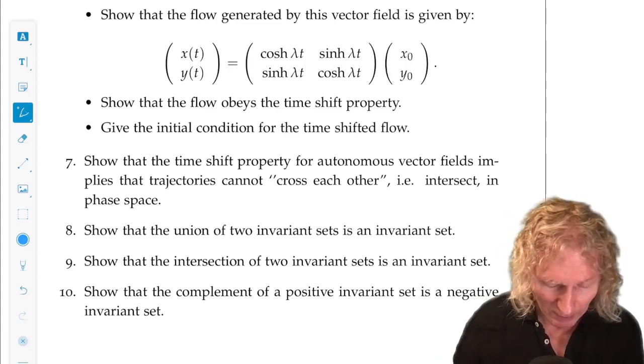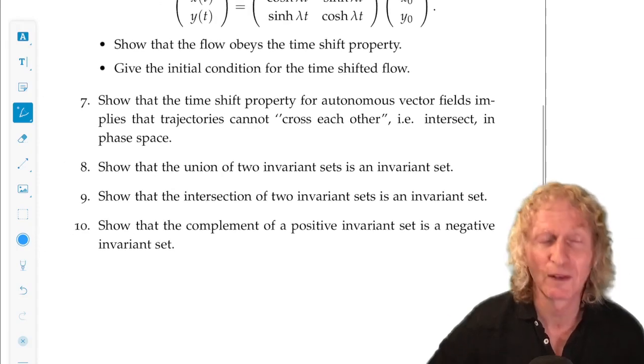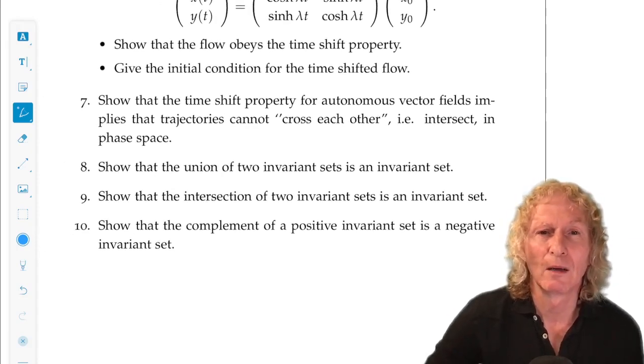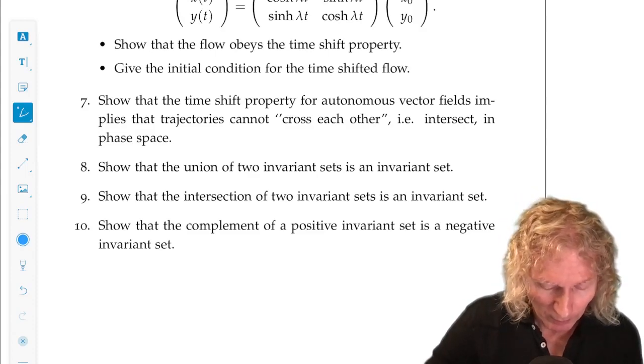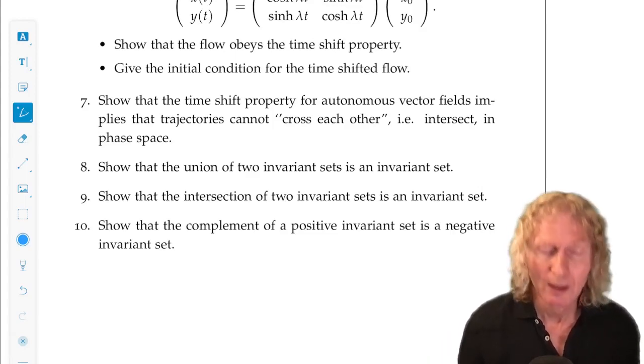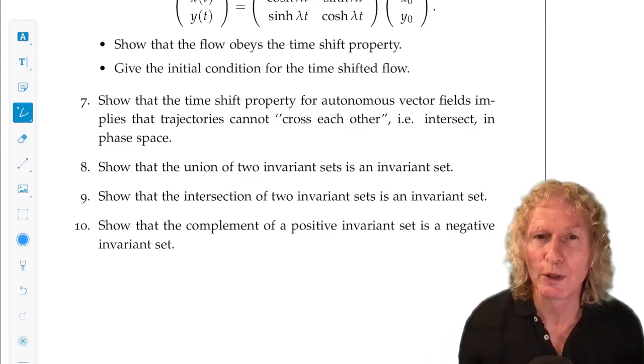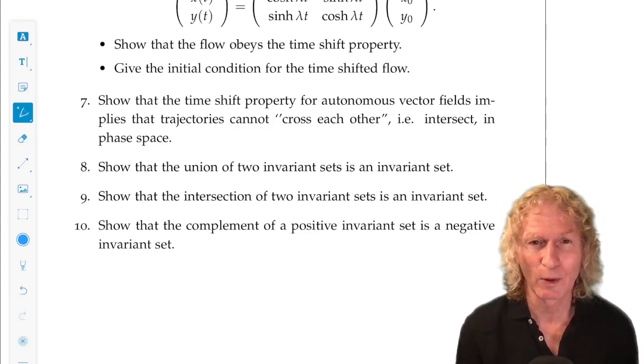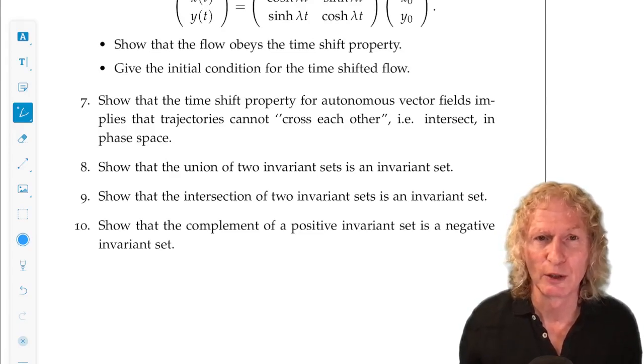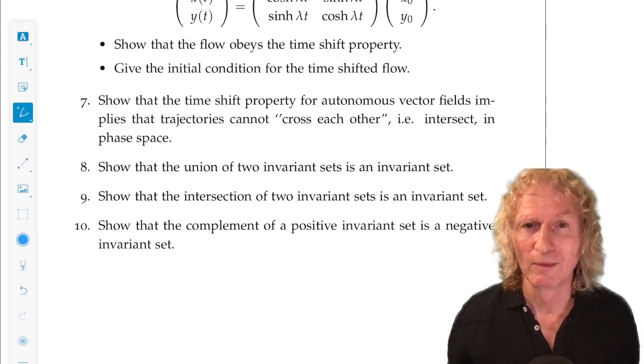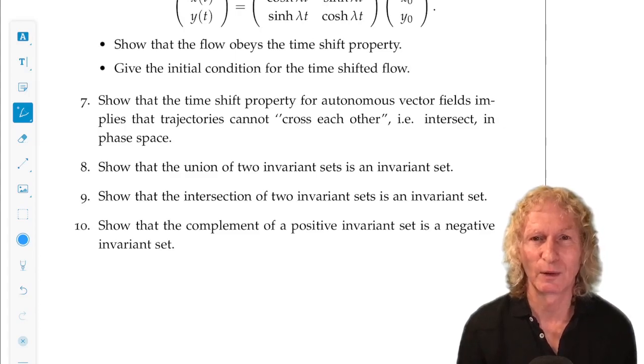Problem eight, nine, and ten. We had the notion of an invariant set for all time, positive and negative. And we have positive invariant sets and so on. But eight, show that the union of two invariant sets is an invariant set. This gets back to where you have to formulate it mathematically to give a proof.